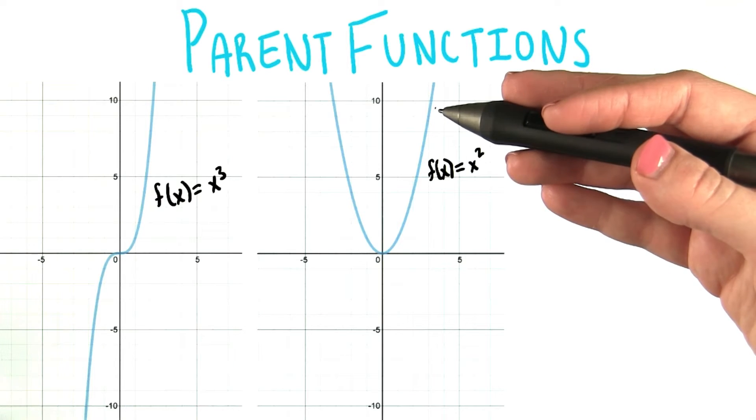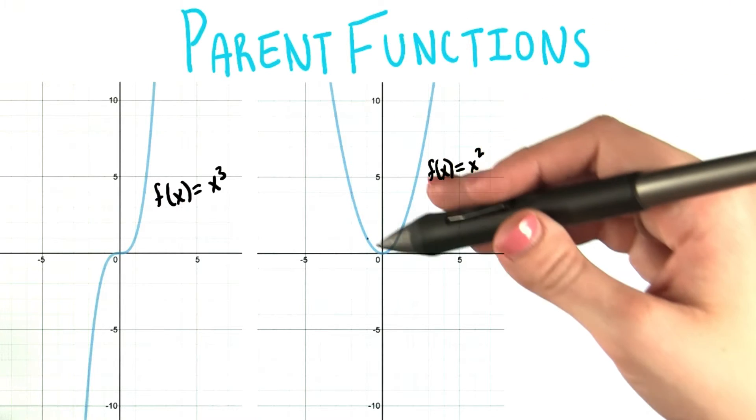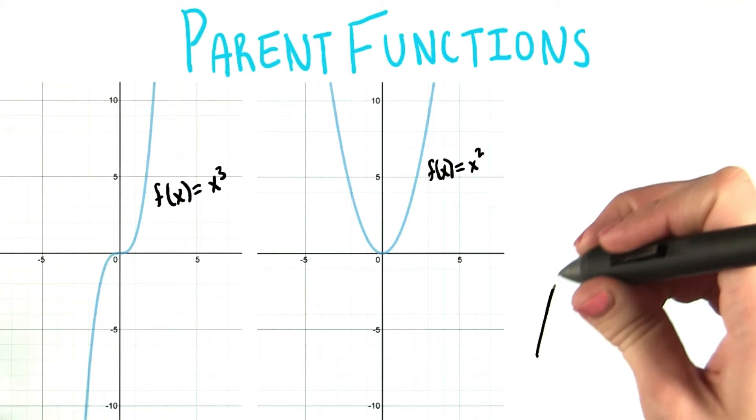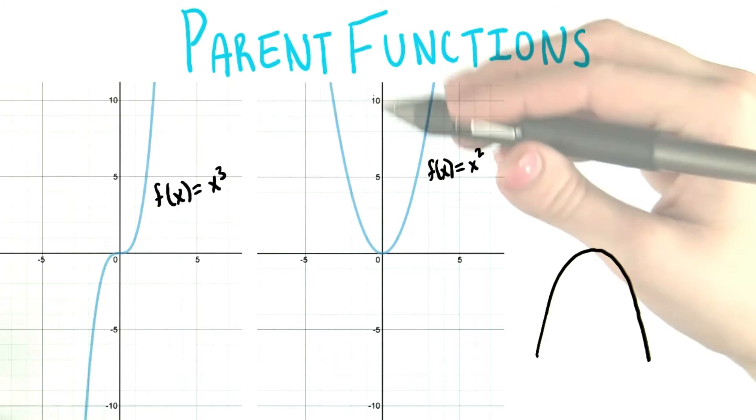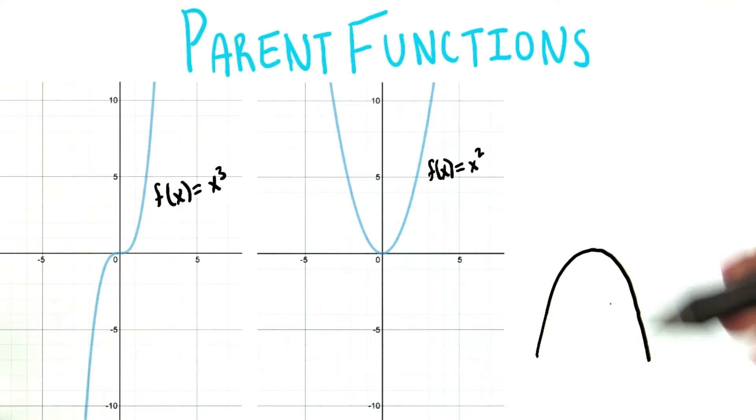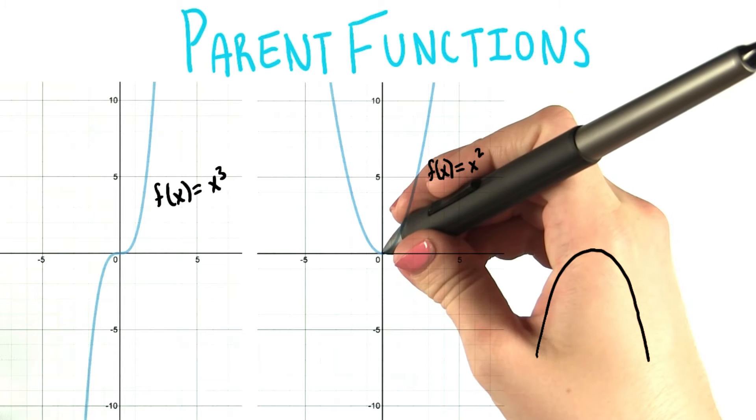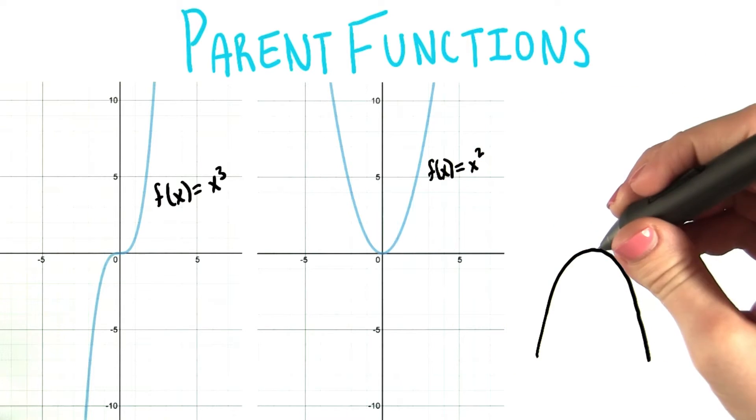We know that the general shape of a parabola is kind of like a u, or if it's upside down, like an n. Whether it's opening upward or opening downward, a parabola has a vertex, which is either its minimum or its maximum.